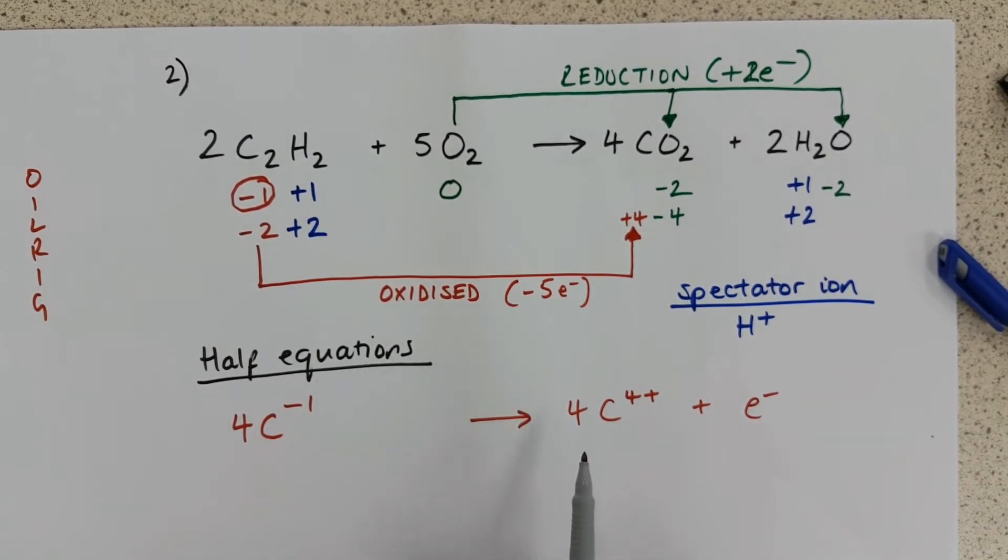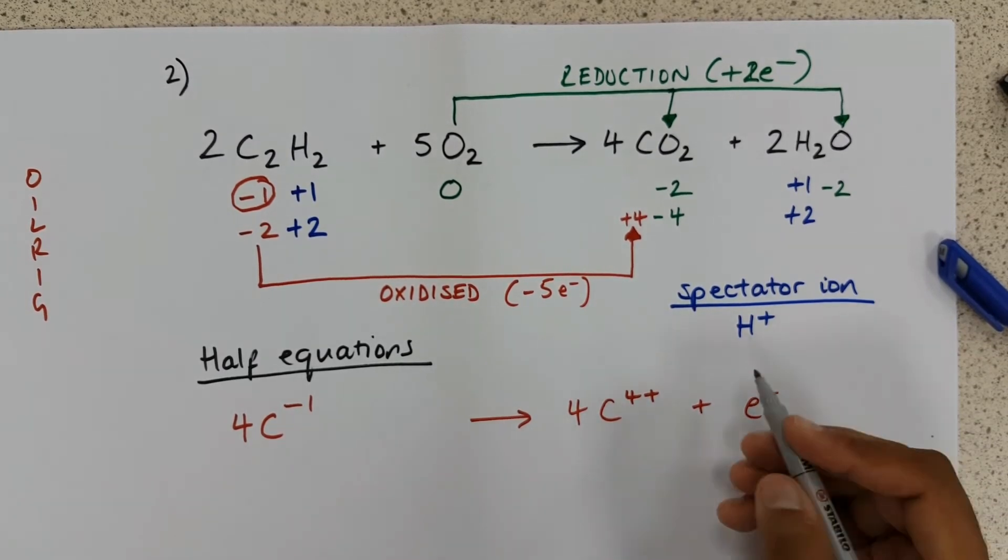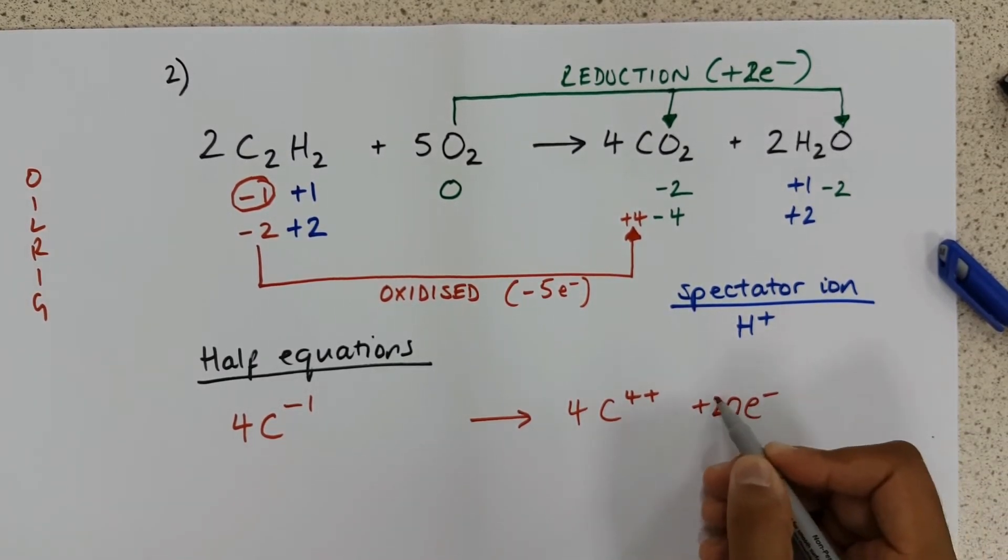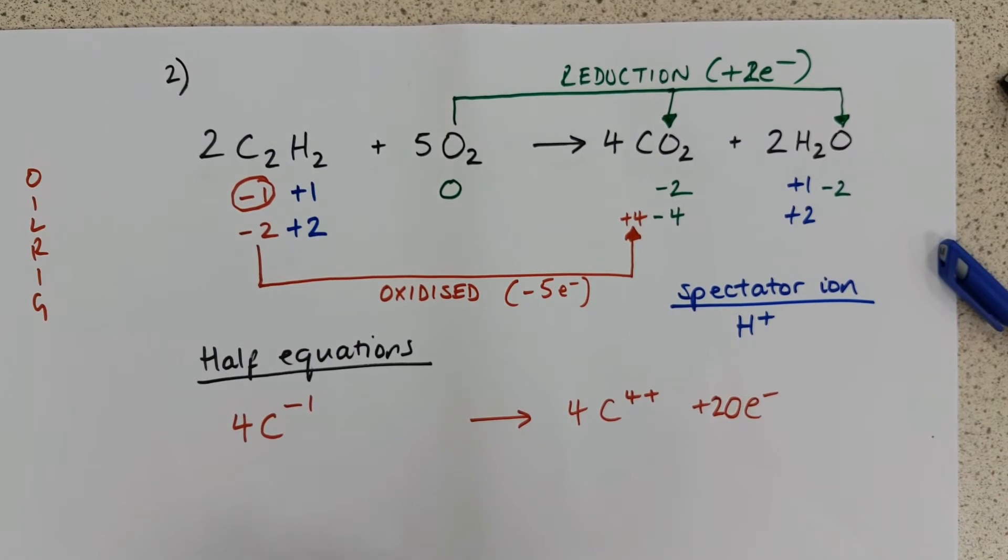If each carbon loses five electrons, and we have four carbon ions, then altogether there is a transfer of 20 electrons. Four times by five electrons each. So hopefully it's quite clear. We need to add 20 electrons to carbon four plus, four of them, to make four carbon minus.